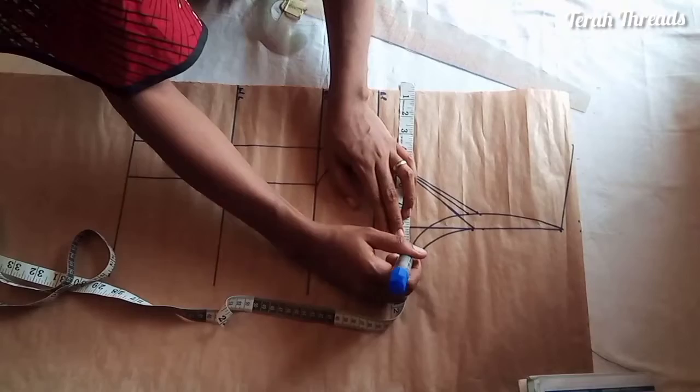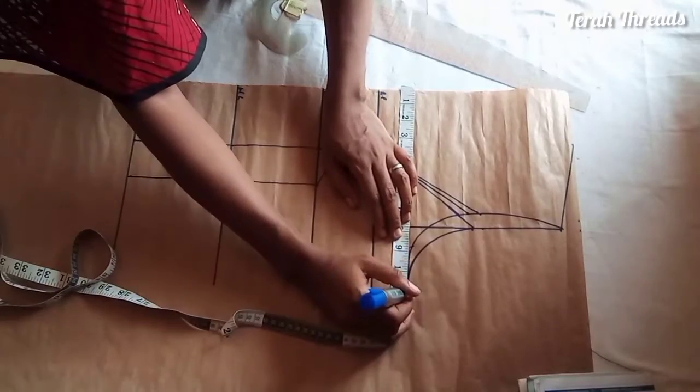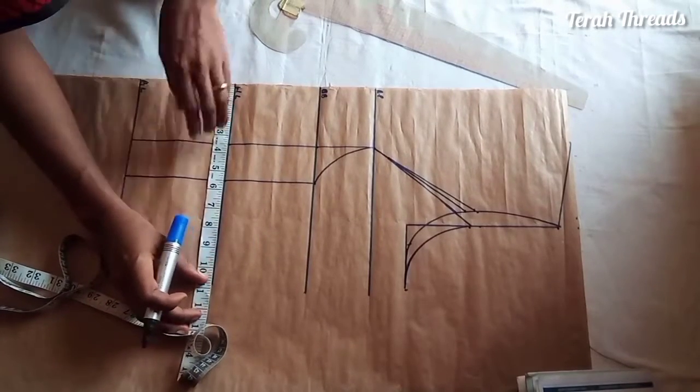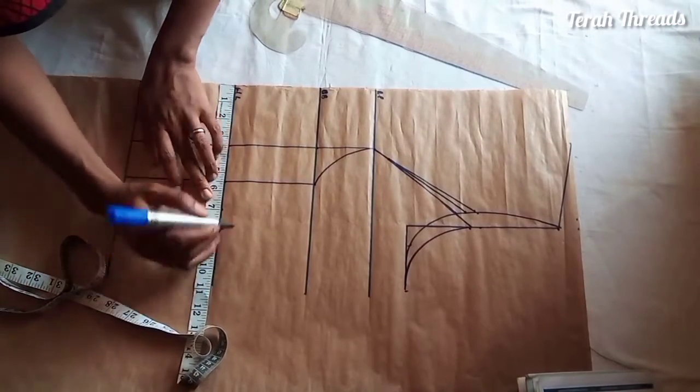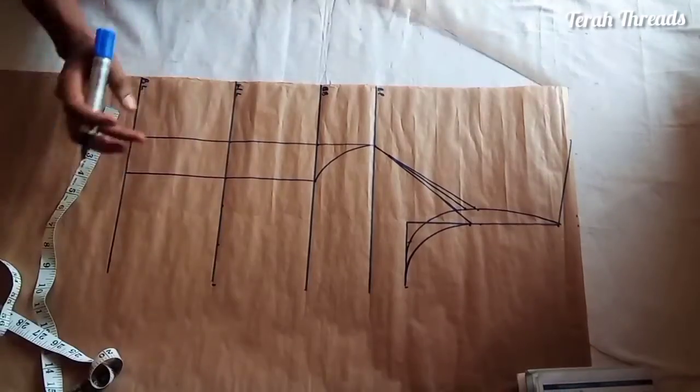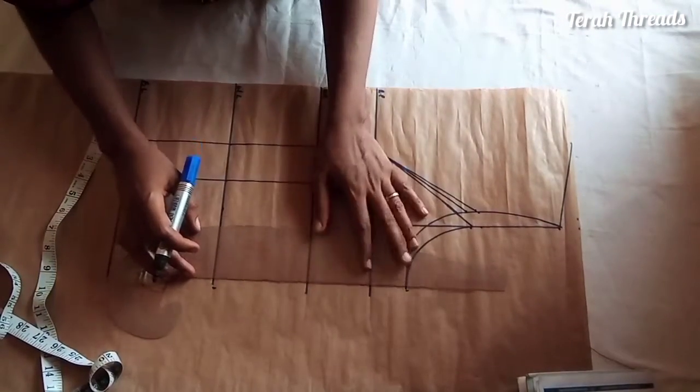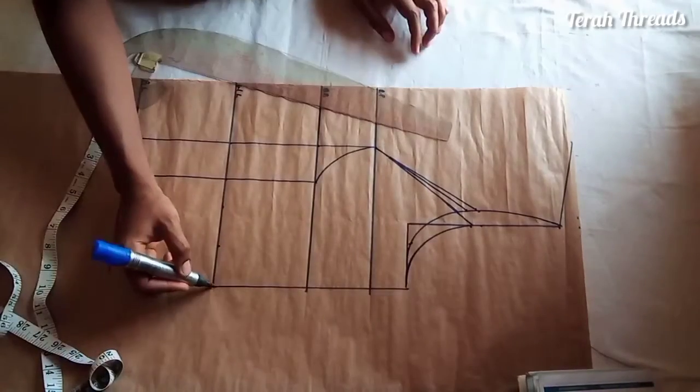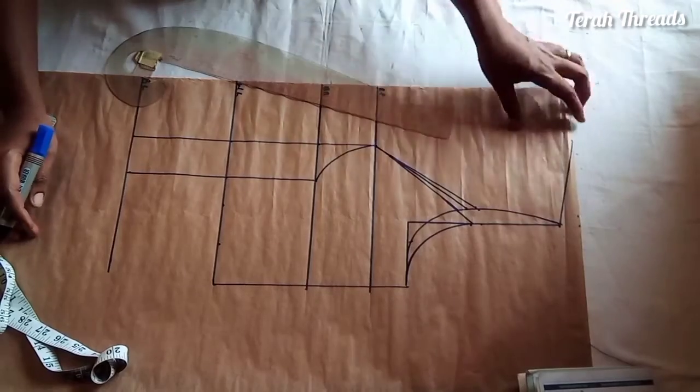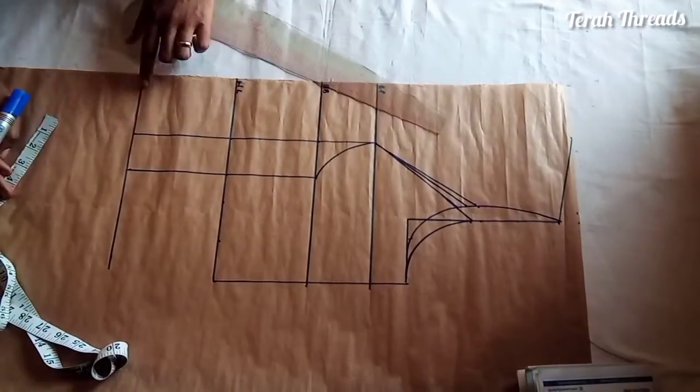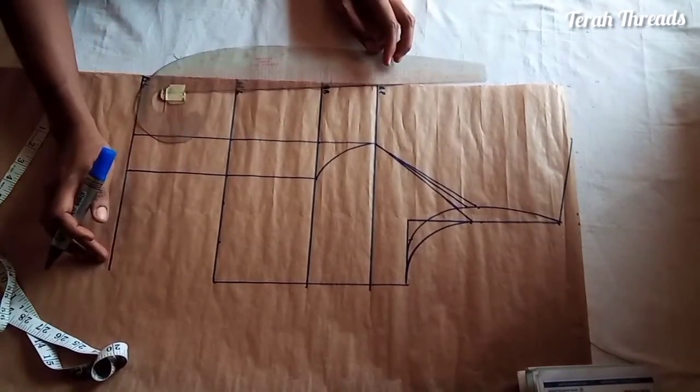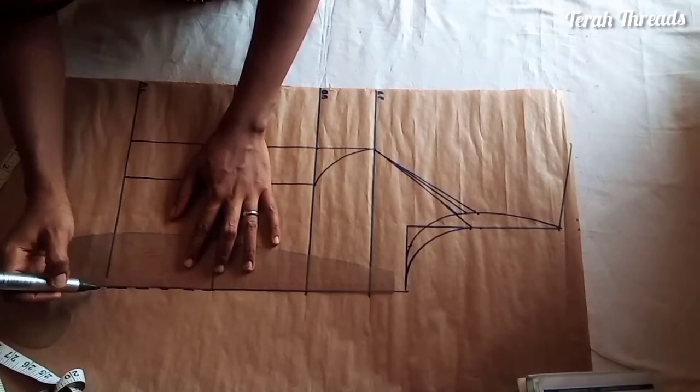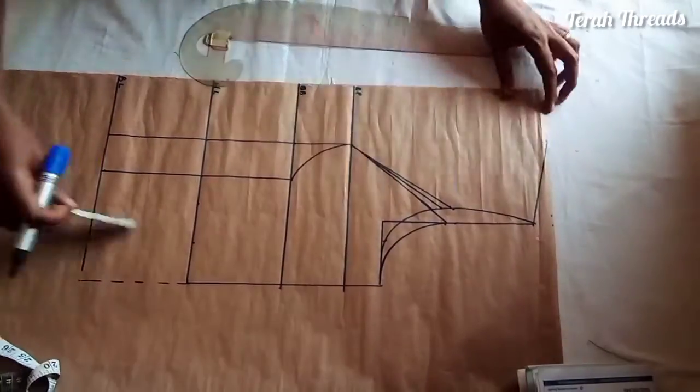My bust round divided by four is 8.5, then two inches for the seam allowance down to my waistline. My waist strand divided by four is seven, plus two inches for the dart allowance and two inches for the seam allowance. I stopped on the waistline. You can extend down to the basque or leave it empty, or create a dotted line.